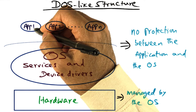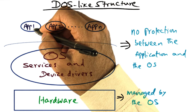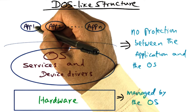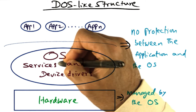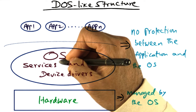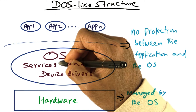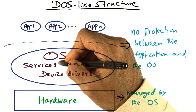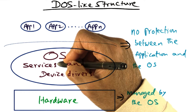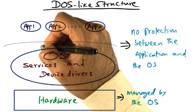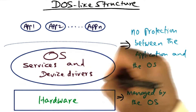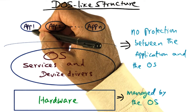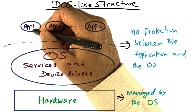With the same speed — at memory speeds — an application can make calls into the operating system and get system services. That's the good news. But the bad news is that there is no protection of the operating system from an errant application.